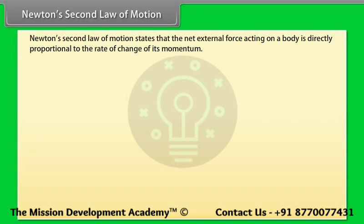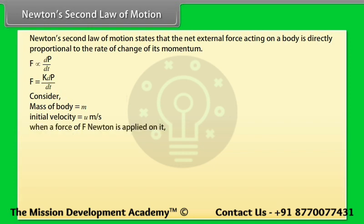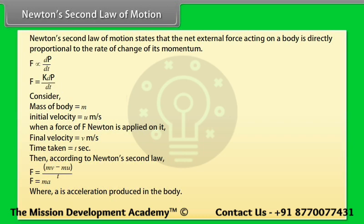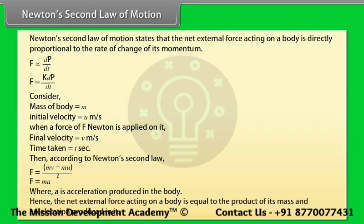Newton's second law of motion states that the net external force acting on a body is directly proportional to the rate of change of its momentum. Consider a body of mass M initially moving with velocity U m/s. When a force F is applied, its velocity becomes V m/s after time T seconds. Then F = (MV − MU) / T = MA, where A is the acceleration. Hence the net external force equals the product of mass and acceleration produced.